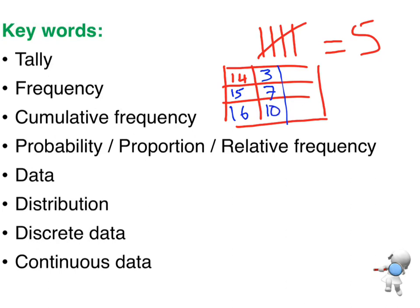So my cumulative frequency, I'm going to start with the 14 years old. I've got 3 of those. Then I'm going to combine the 14 and 15 together to give me a cumulative total of 10. 3 plus 7 gives me the 10.